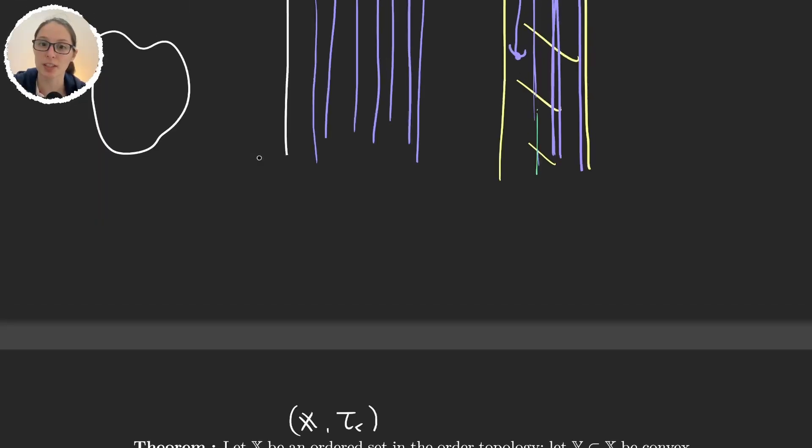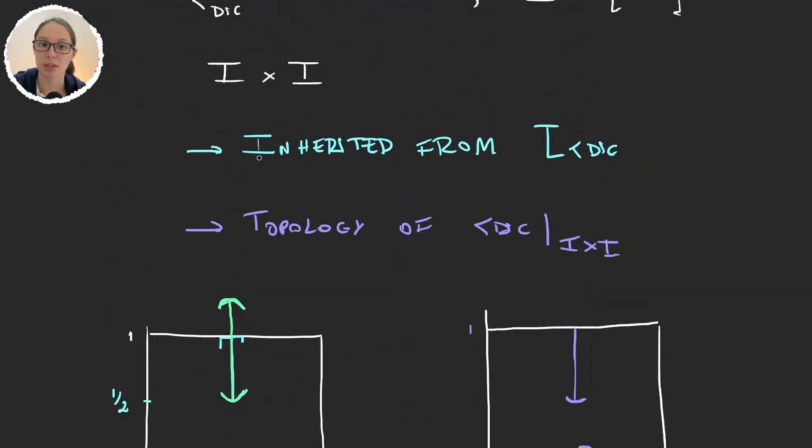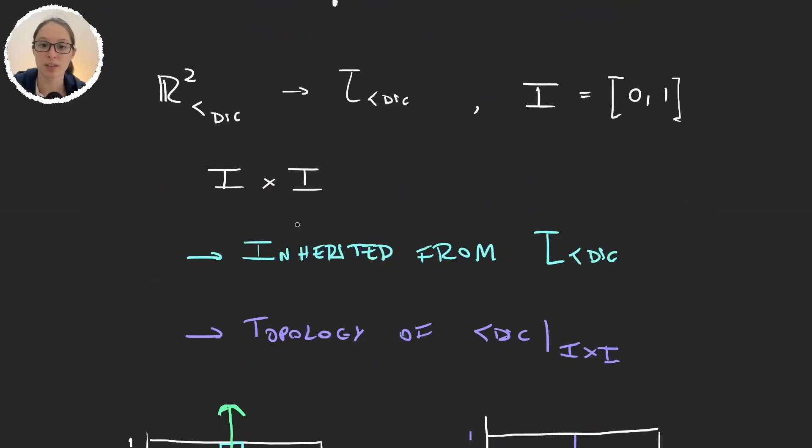So, essentially, here, the plane would be X, the unit square would be Y. And so, it says that, well, if it was convex, which is not, then these two topologies would be the same.